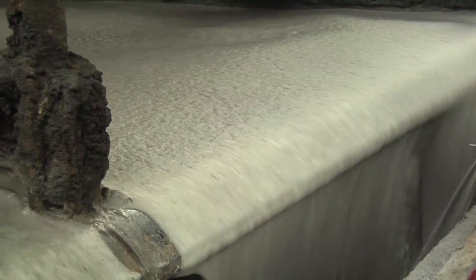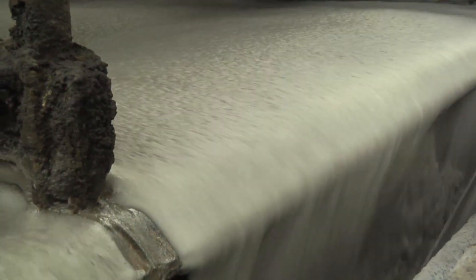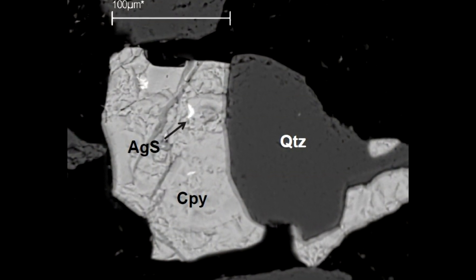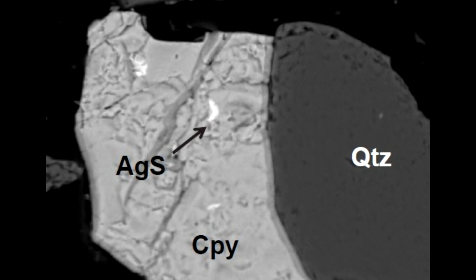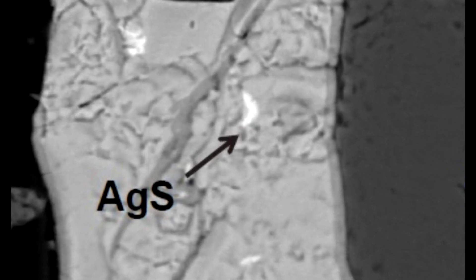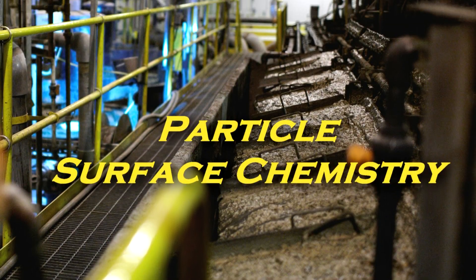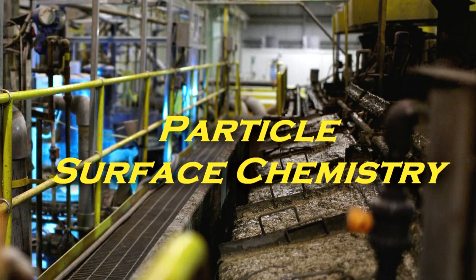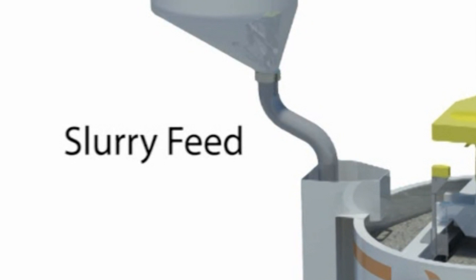Precious metals can be found within ore's metallic particles or contained in formations of oxides or sulfides. When the valuable content of the ore is in one form, like a sulfide, the surface chemistry properties may differ from the surrounding material in the ore, which will allow flotation to be used to separate them.